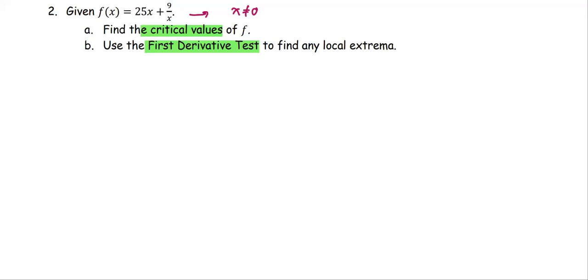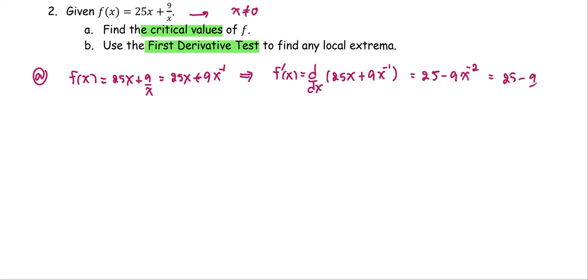To find the critical value, we're going to start with finding the derivative, this is part a. So f(x) equals 25x plus 9 over x, which is 25x plus 9 times x to the negative first. So the derivative or f prime, which is the derivative with respect to x of 25x plus 9 times x to the negative first, that gives us 25 minus 9 times x to the negative second, or 25 minus 9 over x squared.